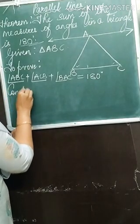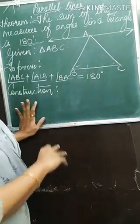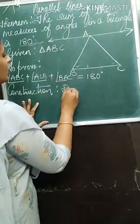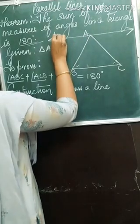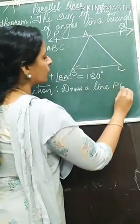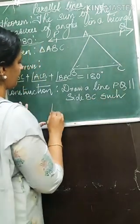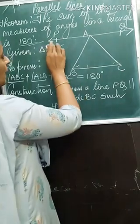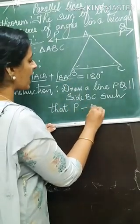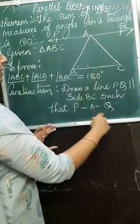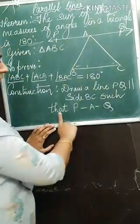Let us write down the construction. Hope you have written given, figure, and to prove. Now for construction, we will write: Draw a line PQ parallel to side BC such that P–A–Q. So the construction is very clear — PQ is parallel to BC such that P–A–Q, showing the betweenness.